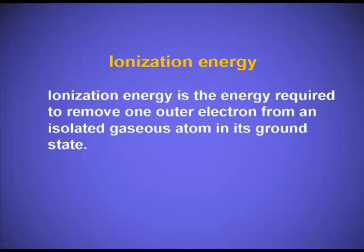When there is a neutral atom, the number of protons equals the number of electrons. But when a cation is formed, an outermost electron is removed or pulled out against the effective nuclear charge. We need energy to do this, because we are pulling out the electron against the nuclear charge. This amount of energy is known as ionization energy or ionization enthalpy. Ionization energy is the energy required to remove one outer electron from an isolated gaseous atom in its ground state.